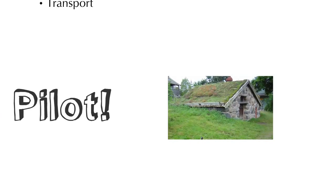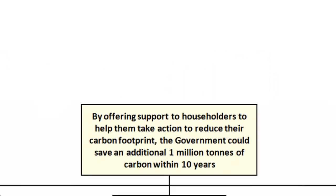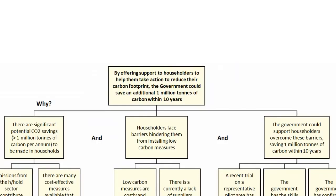So they come up with a hypothesis that by offering support to householders to help them take action to reduce their carbon footprint, the government could save an additional 1 million tonnes of carbon within 10 years. Why do they believe that? Well, there are three key supporting pieces of information. Firstly, there are significant potential CO2 savings — more than 1 million tonnes of carbon per annum — to be made in households. Secondly, householders face barriers hindering them from installing low carbon measures. And thirdly, the government could support households to overcome these barriers, saving 1 million tonnes of carbon within 10 years.